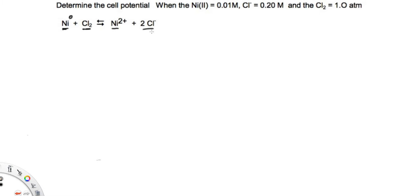Let's determine the cell potential. Nickel is reacting with chlorine to produce nickel 2+ chloride.